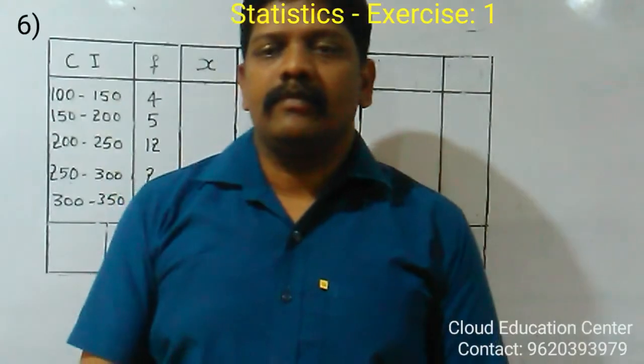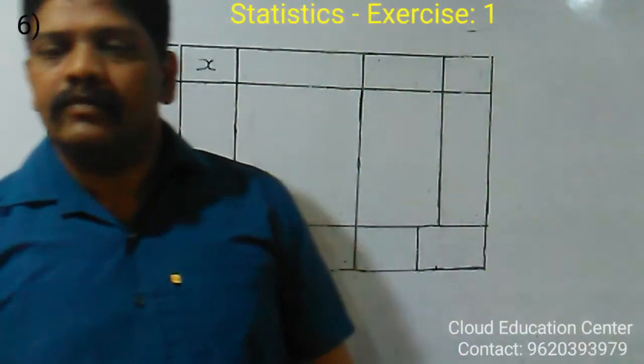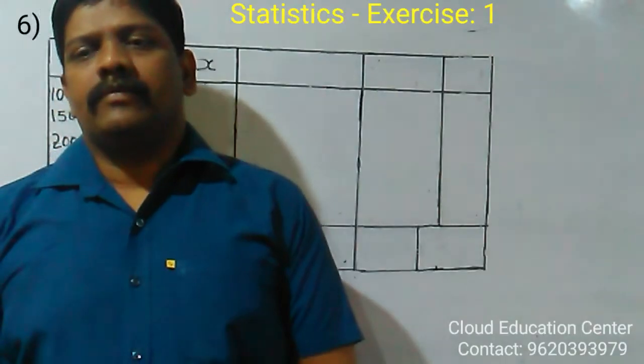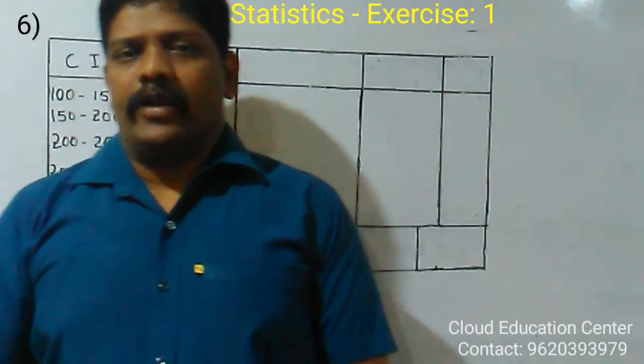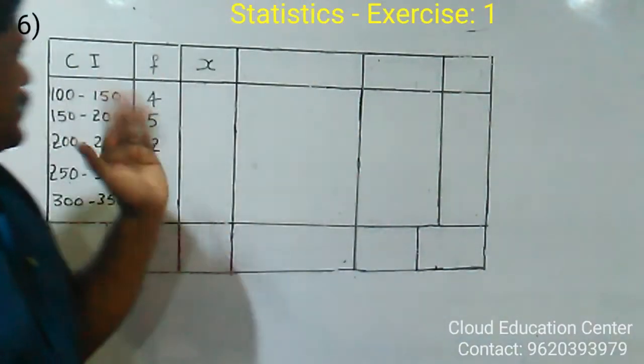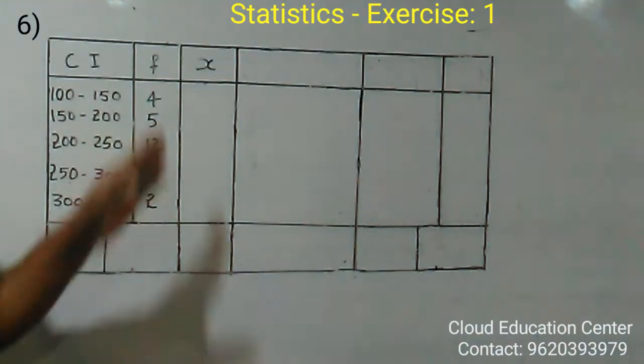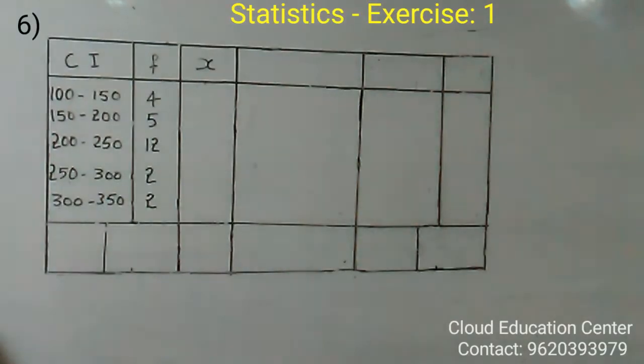The table below shows the daily expenditure on food of 25 households in a locality. Find the mean daily expenditure on food by a suitable method. The table is given 100 to 150, 150 to 200, 200 to 250, 250 to 300, and 300 to 350, and frequency also is given.